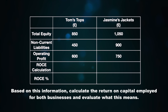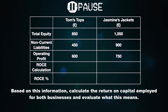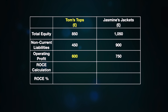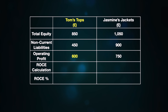Total equity includes a business's retained profit, reserves, and share capital. Non-current liabilities refers to the long-term debts of the business, such as any loans, mortgages, bonds, or debentures that the business has taken. Let's now take a look at an example and calculate the return on capital employed for two competing businesses.